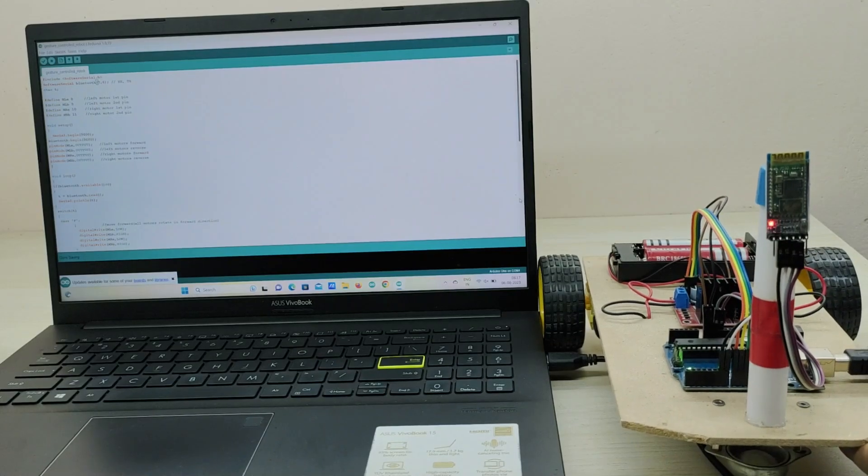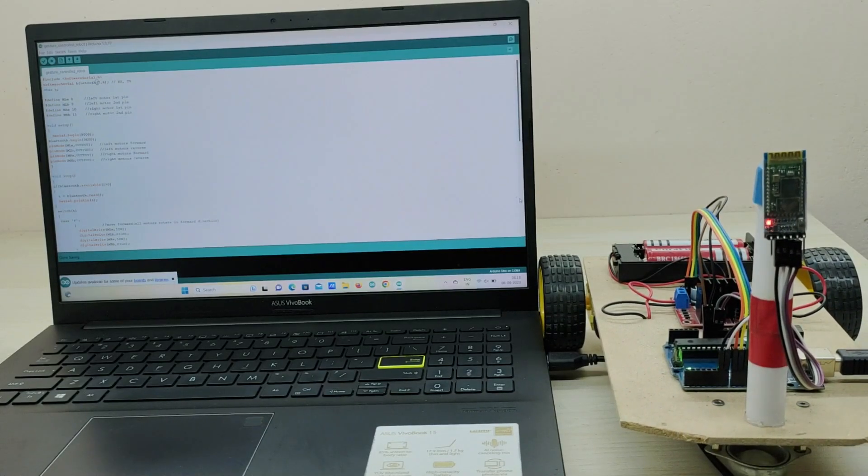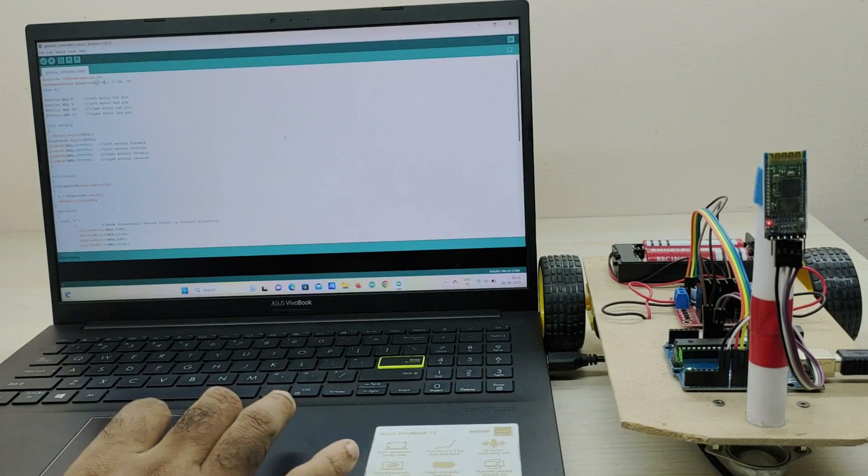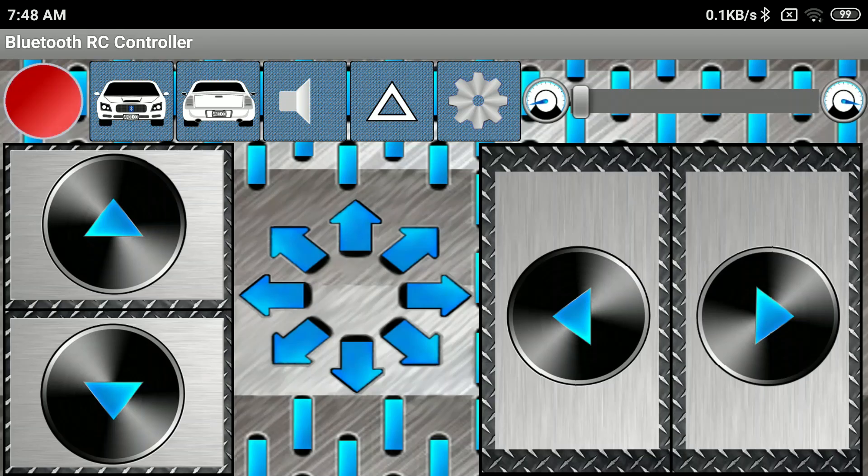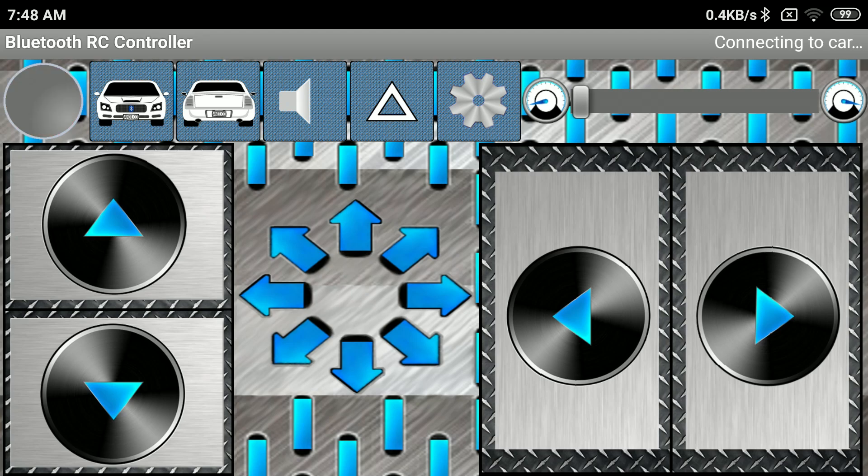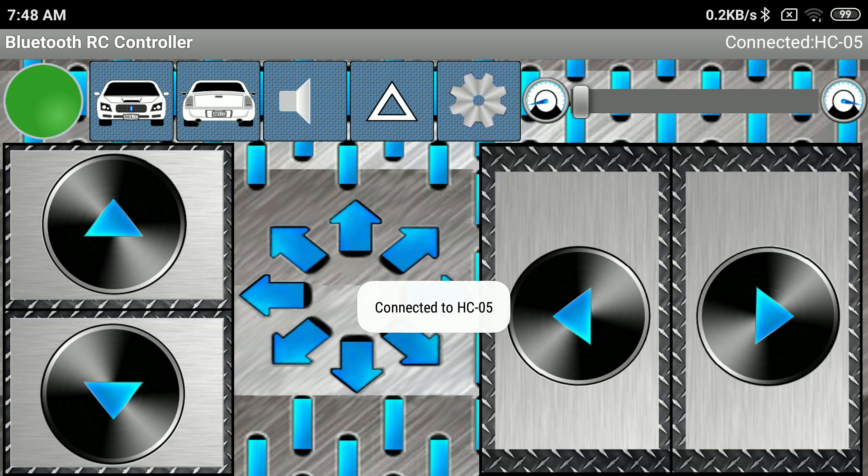Now we have to upload the code to Arduino board from PC or laptop. The link to download the code is given in the description. Now download the software from Play Store using the link given in description. Search for Bluetooth devices and connect to HC-05 module. Use pin 1234 while pairing for the first time.